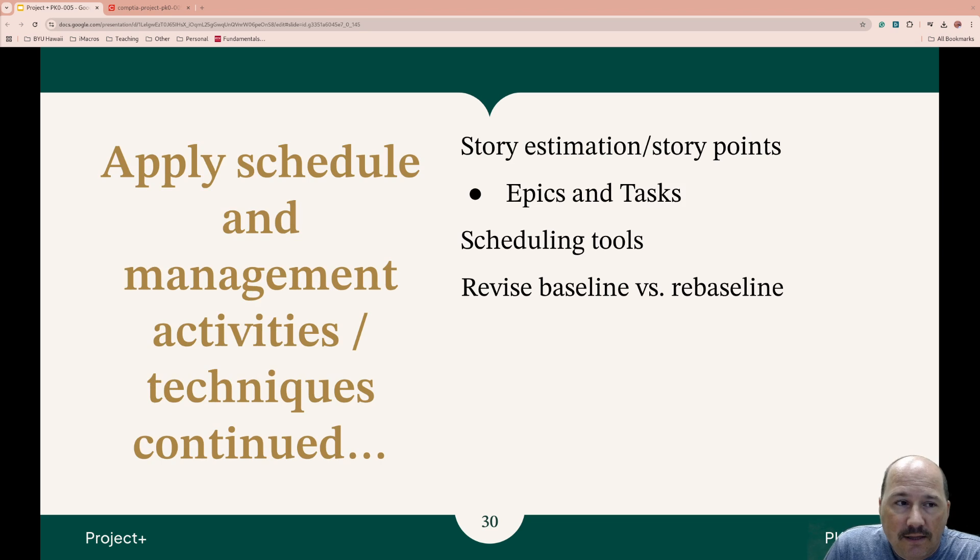Continuing on with this topic, story estimation and story points. Story points are units using agile methodologies to estimate the effort to implement a user story. You consider factors like how complex it is and the amount of work that's involved. When it comes to that, then you have epics and tasks. Epics are large bodies of work that might span multiple sprints. They're broken down into smaller workable pieces called stories so that you can work on them during sprints.